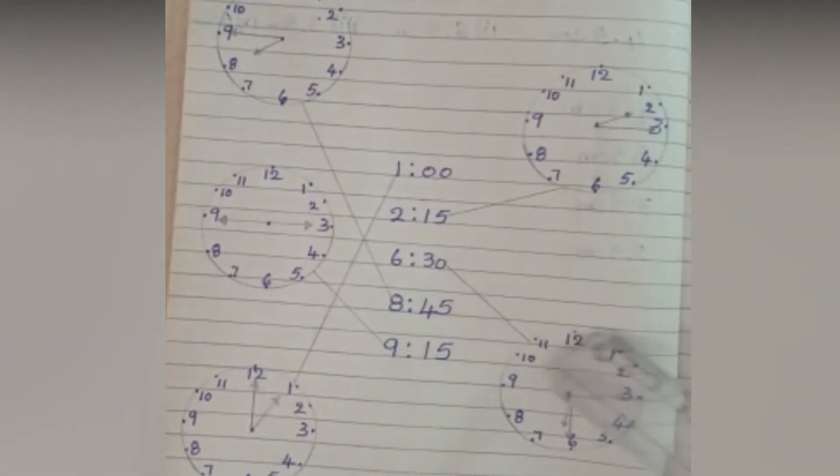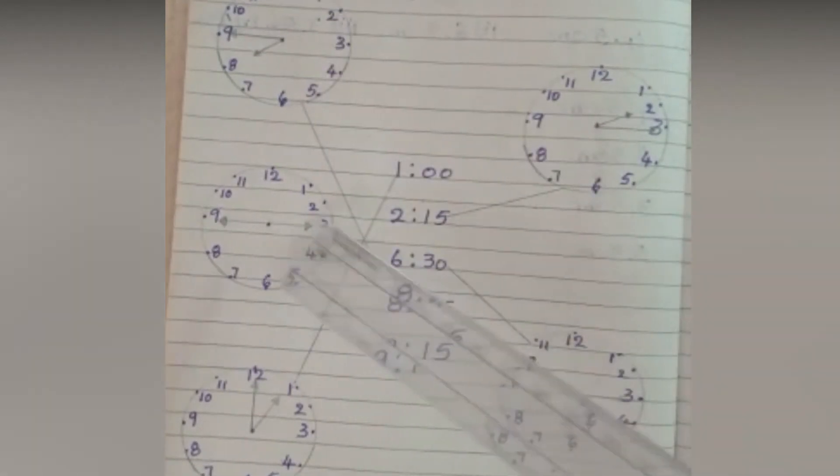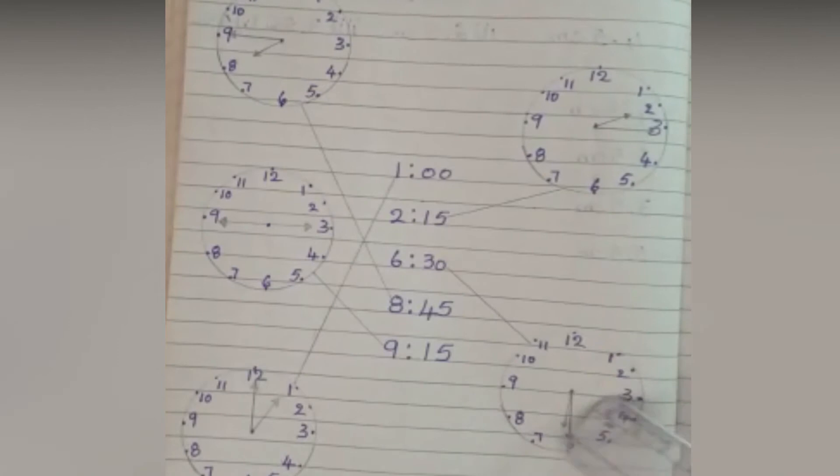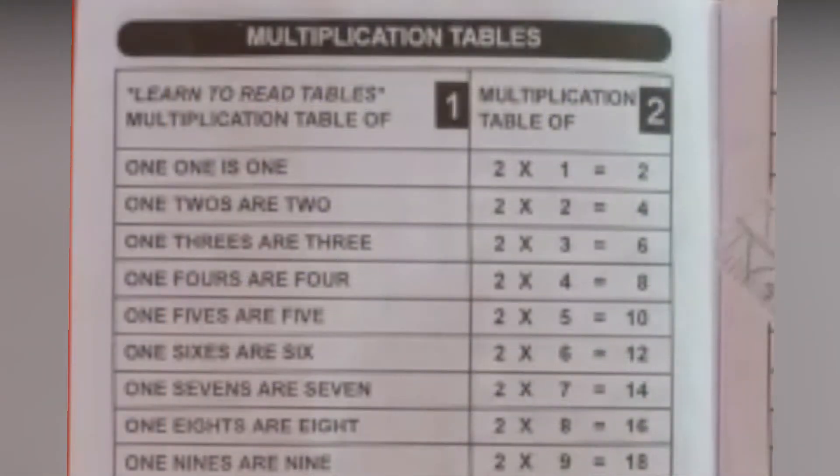For 6:30, 8:45, and 9:15, draw the lines and do the matching. Let us learn multiplication tables of 3, 4, 5, and 6.